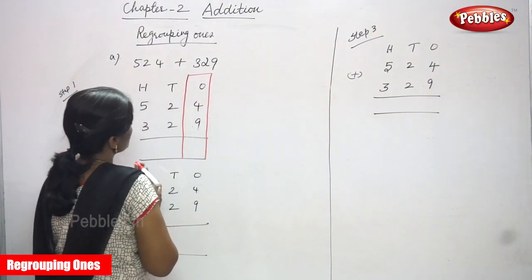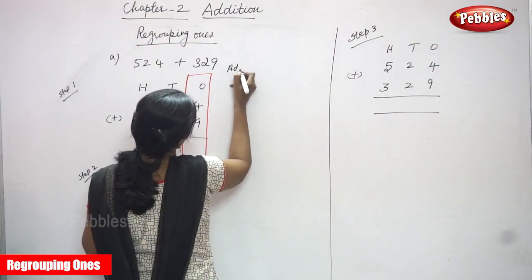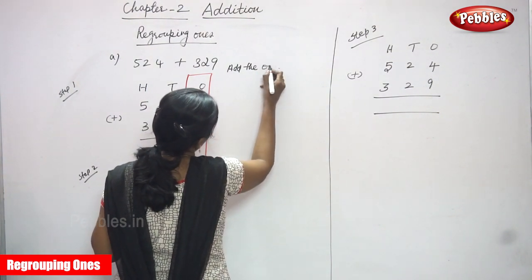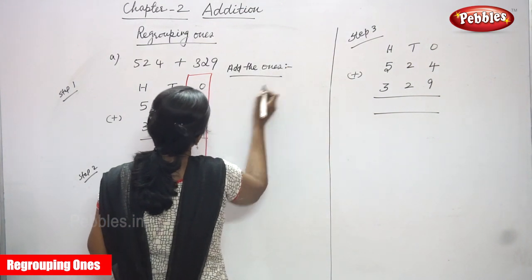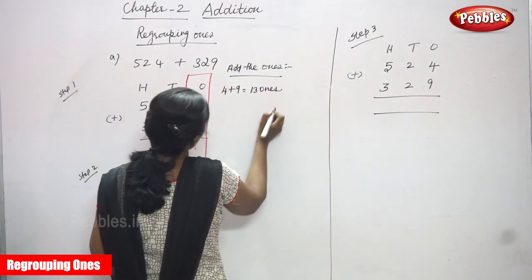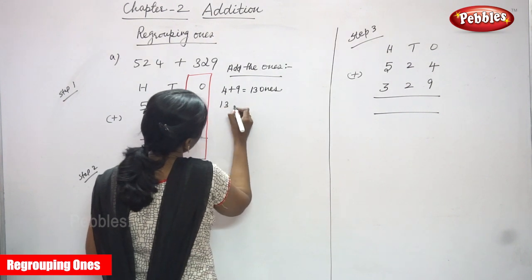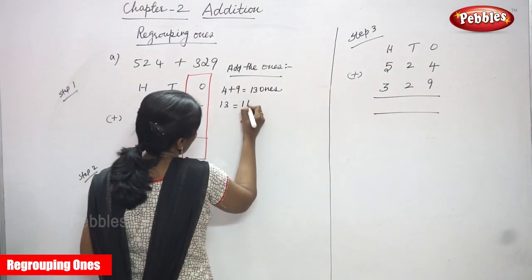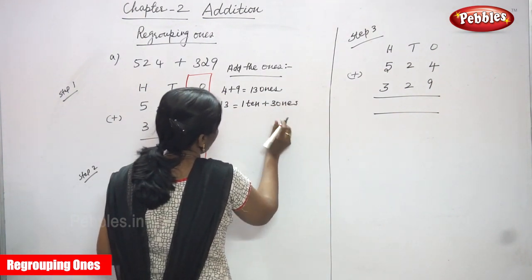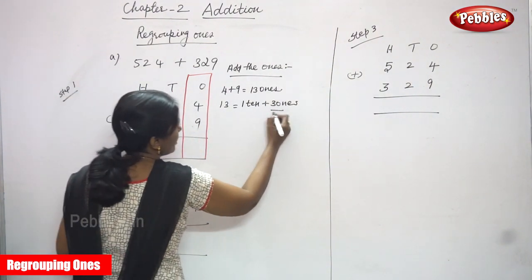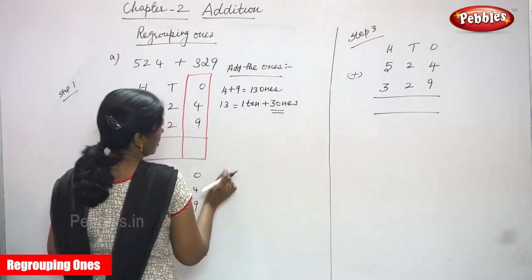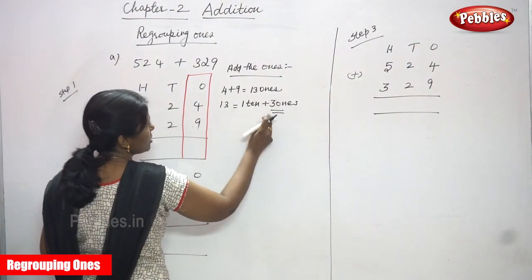Add the ones. So 4 plus 9 equals 13 ones. Regrouping 13 means you have to split it: 13 ones means 1 ten plus 3 ones. So I've taken only the 3 ones here — that means I write only the 3 in the ones place.